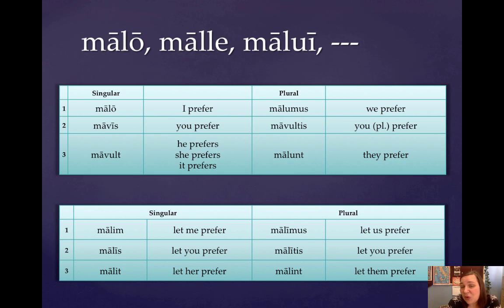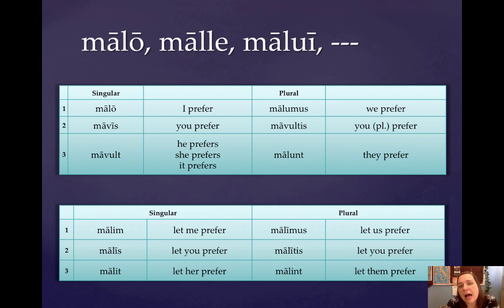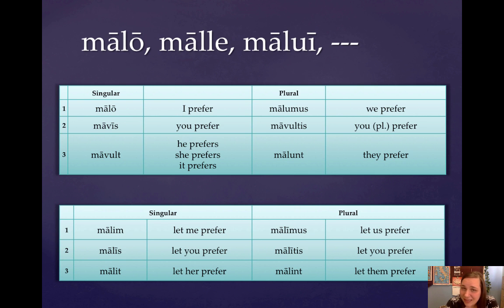All right, that's it. You just have to learn these irregular forms. The rest of the tenses and moods — just active voice — are going to be pretty much what you expect them to be. It's just the present indicative and subjunctive that you have to pay attention to. So take good notes. I will check them in class, and I hope you have a lovely evening.